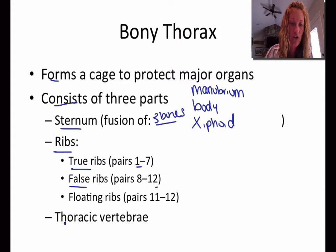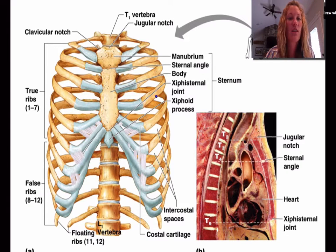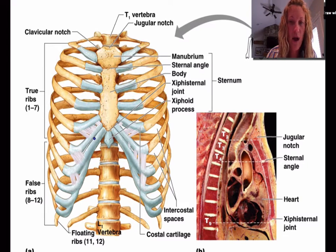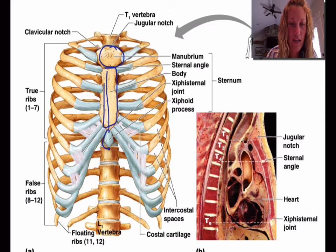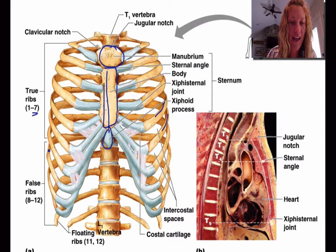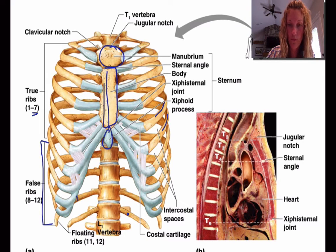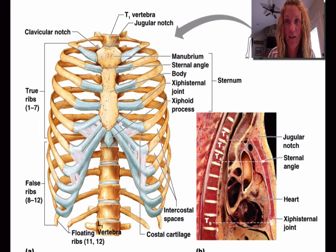The thoracic vertebrae also make up a part of the bony thorax. Looking at the picture, we have our true ribs connecting to cartilage, the manubrium here, the body right here, and the xiphoid process right here. Ribs one through seven are true ribs, false ribs are eight through twelve, and the last two of those are known as floating ribs. That will wrap up the rest of the axial skeleton.